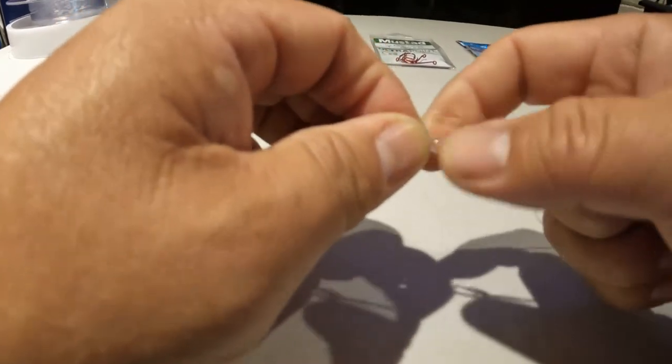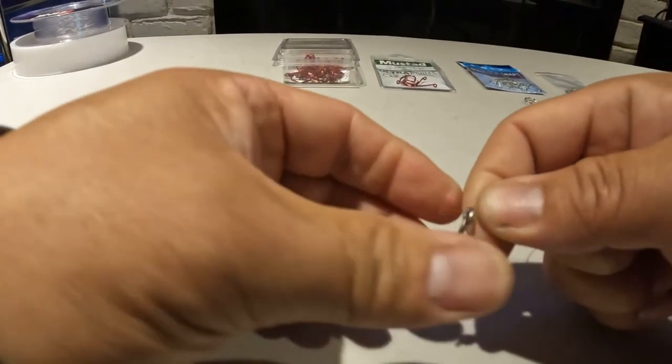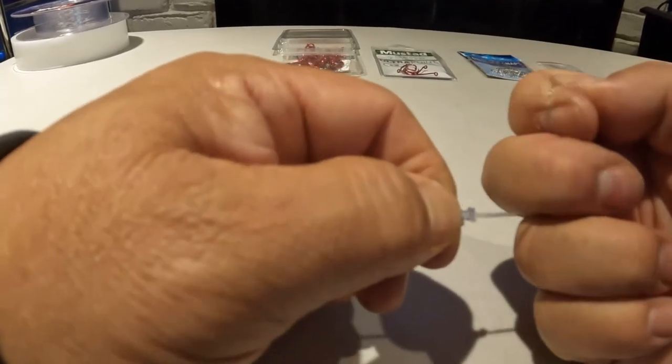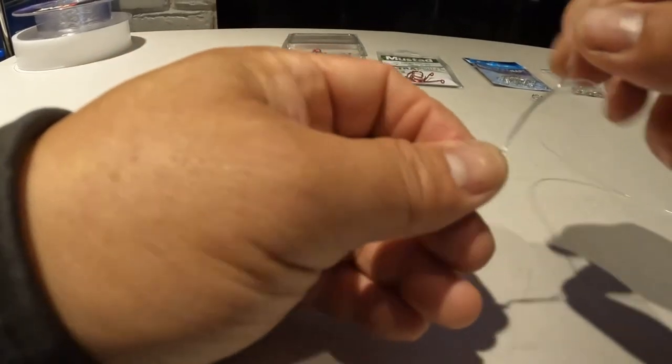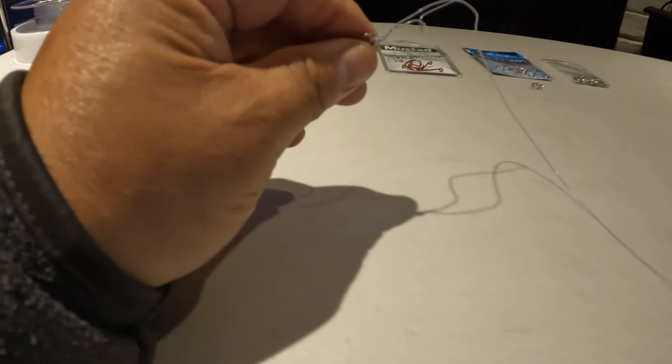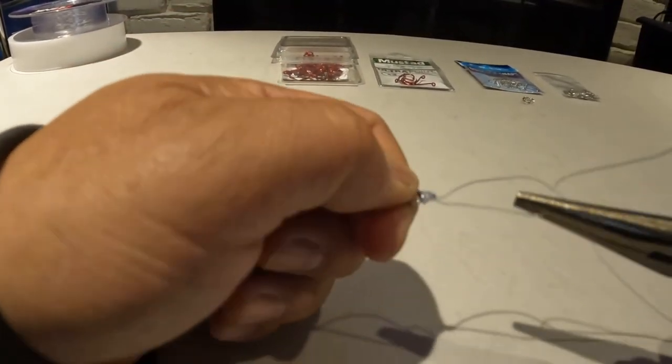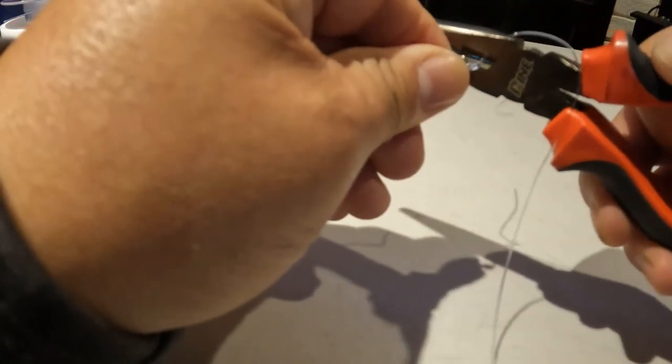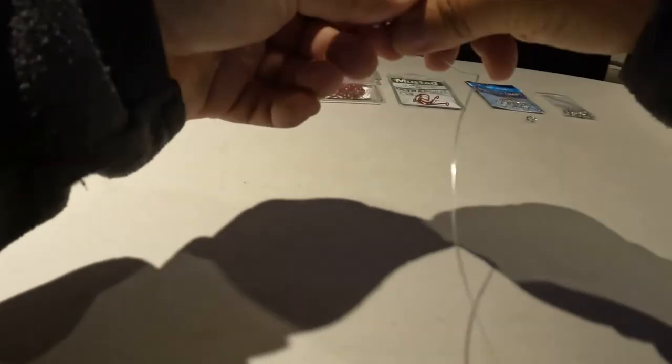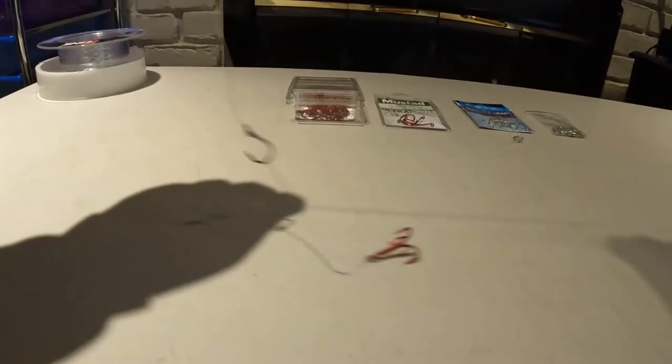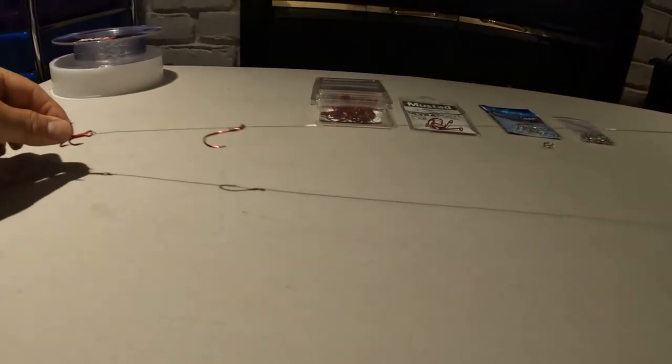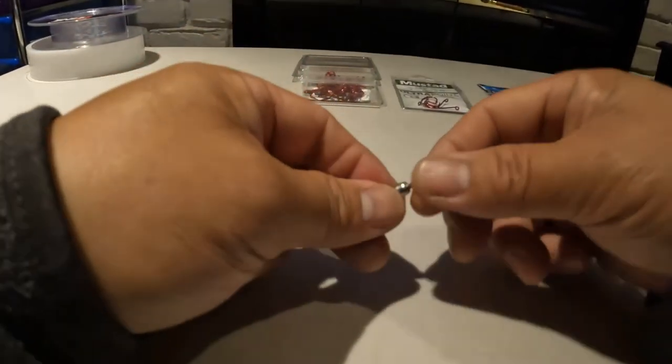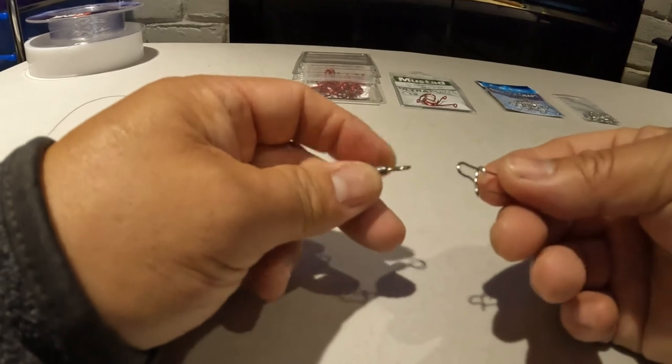And then once you kind of close, hold the swivel, hold these two lines and just tighten like so. Pull on this a little bit and then tighten up the tag. Cut off the tag and there you have it. And then if you want to add on the dual lock snaps, just add it on.